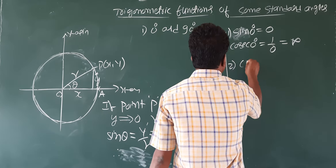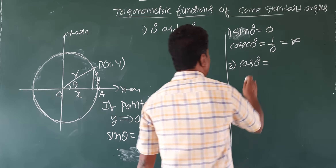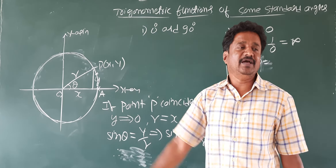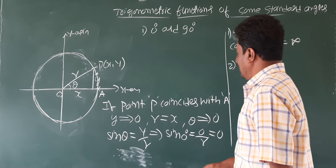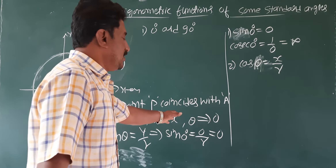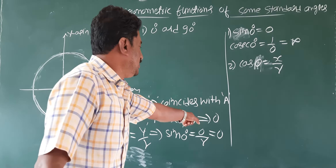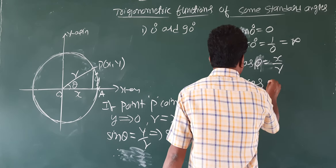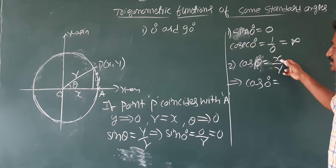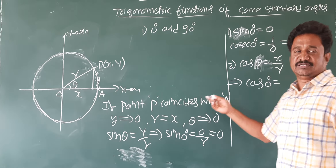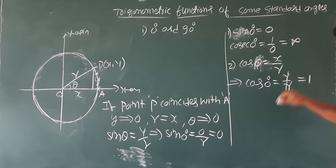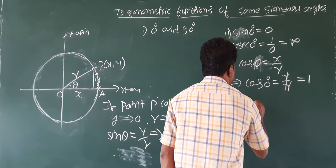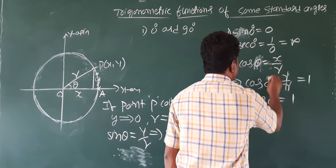Next, cos zero degree. Cos theta means adjacent by hypotenuse, which is x by R. When theta becomes 0, x becomes R. So cos 0 degree equals R by R, which is 1. Therefore cos 0 degree is 1.